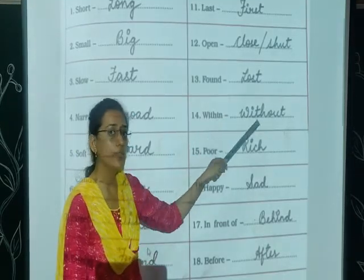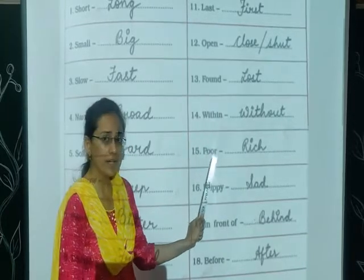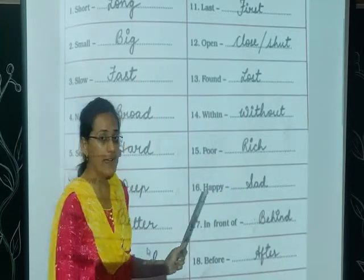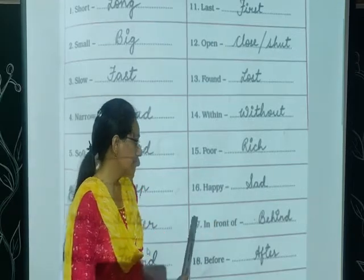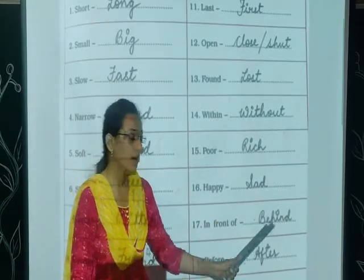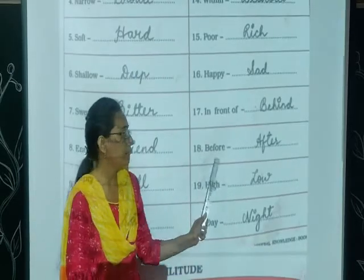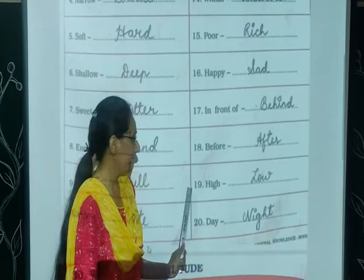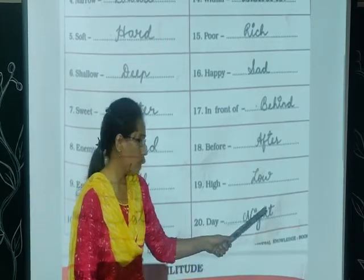Fourteen: within — without. Fifteen: rich. Sixteen: happy — sad. Seventeen: in front of — behind. Eighteen: before — after. Nineteen: high — low.